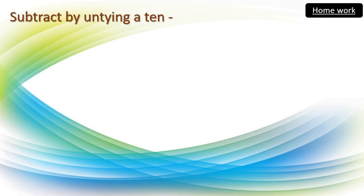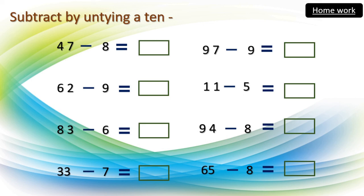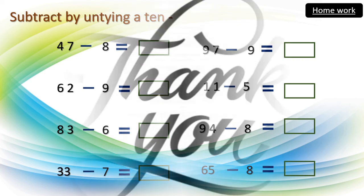Dear children, I hope you understood these types of sums — untying tens and doing subtraction. Here are some sums for homework. Follow the same procedure: first untie, then convert into units, then do the subtraction, and you will get the answer. Remember to reduce 1 ten while writing, because we are untying that one and making them into units. Thank you, dear children. There are many more sums in your textbook — please try to solve them. Bye-bye.